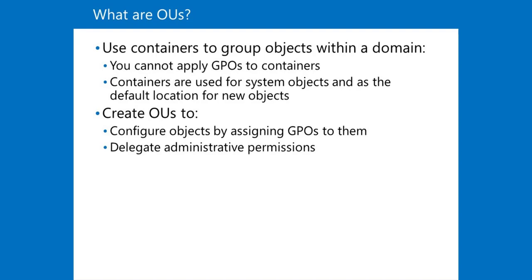Hierarchy design. The administrative needs of the organization dictate the design of an OU hierarchy. Geographic, functional, resource, or user classifications could all influence the design. Whatever the order, the hierarchy should make it possible to administer ADDS resources as effectively and flexibly as possible. For example, if you need to configure all IT administrators' computers in a certain way, you can group all the computers in an OU and then assign a GPO to manage those computers.